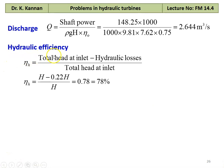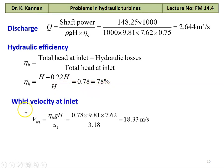We calculate the hydraulic efficiency. Eta H equal to total head minus hydraulic losses divided by total head, which is (H minus 0.22H) divided by H equal to 0.78, that is 78%. The whirl velocity at the inlet: from the definition of hydraulic efficiency, Vw1 equal to eta H into g into H divided by U1, which is 0.78 into 9.81 into 7.62 divided by 3.18 equal to 18.33 meters per second.